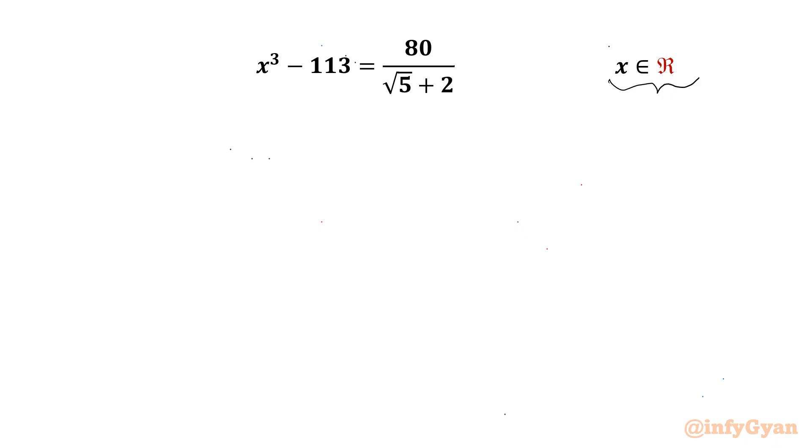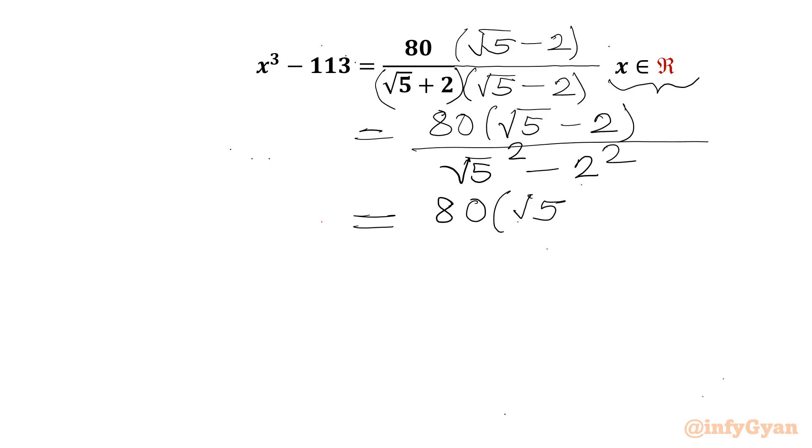I will consider rationalization of denominator. So I need to multiply square root 5 minus 2 in the numerator and in the denominator. So we can write 80 square root 5 minus 2 over a plus b times a minus b. We can write square root 5 whole square minus 2 whole square using difference of squares formula. So 80 square root 5 minus 2 over root 5 square is 5, 2 square is 4. So denominator will be 1.